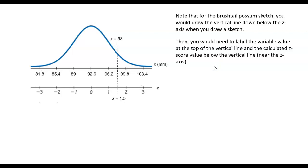Then you would need to label the variable value that we were calculating a z-score value for at the top of the vertical line and the calculated z-score value below the vertical line near the z-axis.